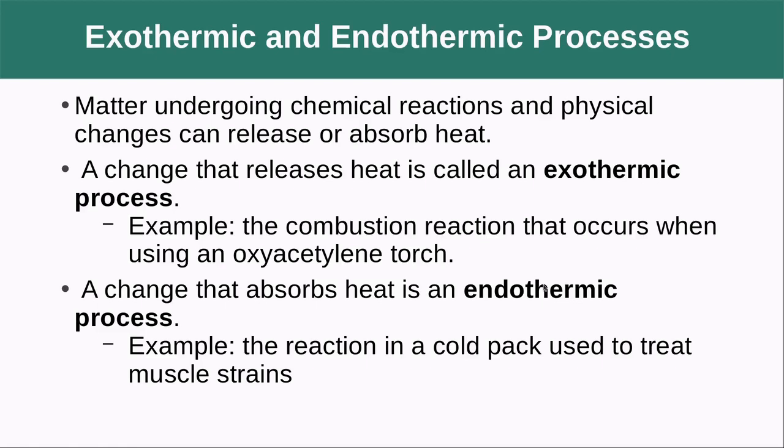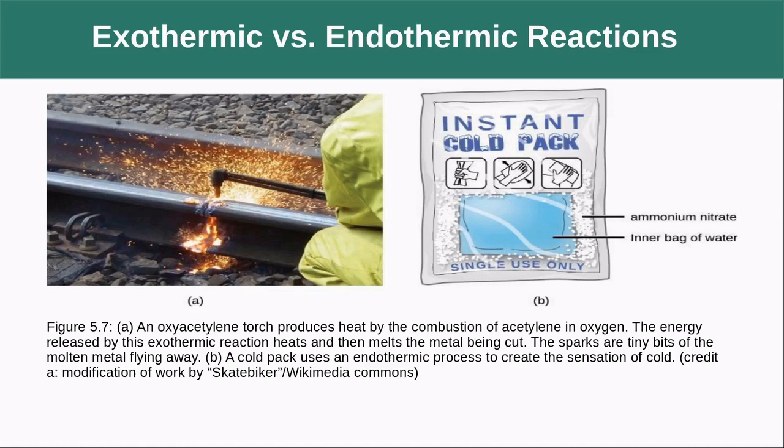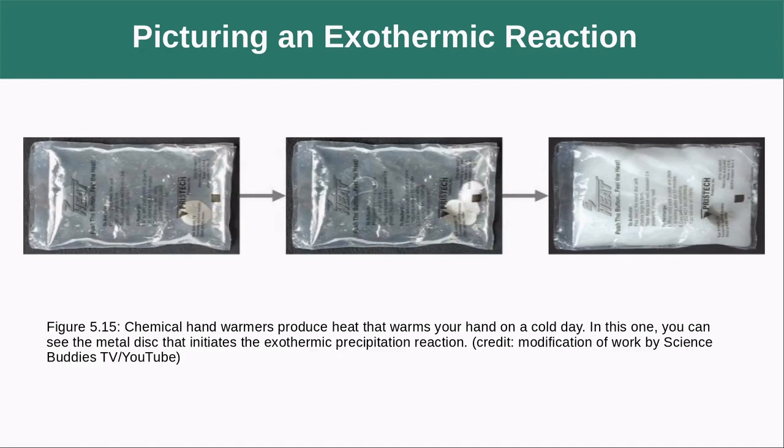Matter undergoing chemical reactions and physical changes can release or absorb heat. A change that releases heat is called an exothermic process — for example, a combustion reaction like an acetylene torch. Any time you have fire, that's an exothermic reaction with lots of heat coming off. A change that absorbs heat is an endothermic process, like when you use one of those instant cold packs from a first aid kit. Hand warmers you see in winter are an exothermic reaction releasing heat.